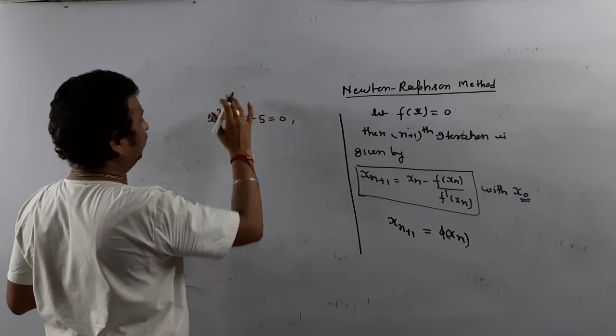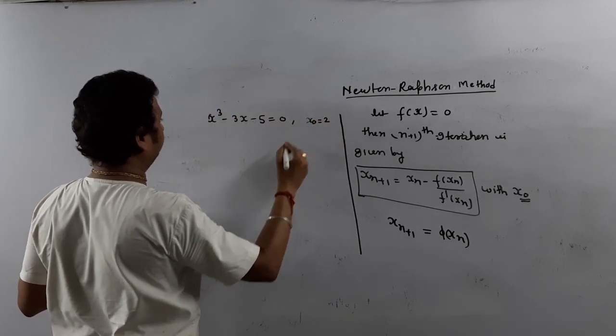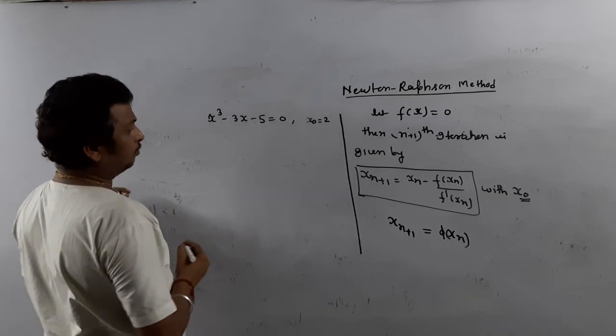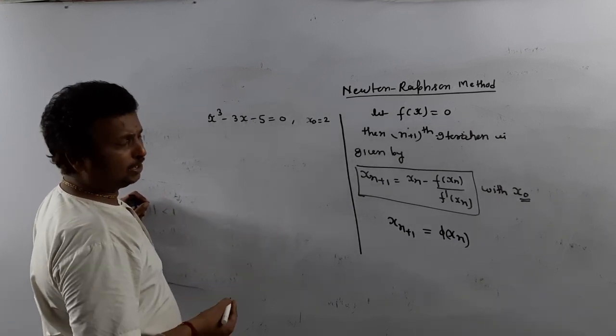What is f(0)? Negative. f(1)? Negative. f(2)? Negative. f(3)? Positive. So root lies between two and three. We have taken x_0 as 2. Now we have to solve this one by Newton-Raphson method.